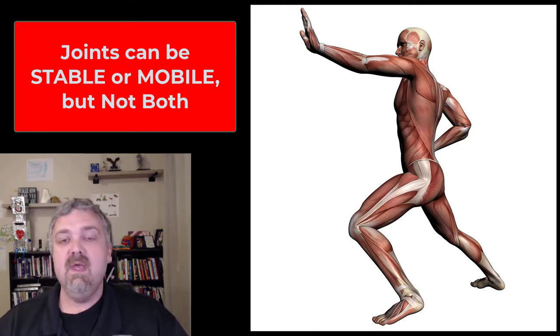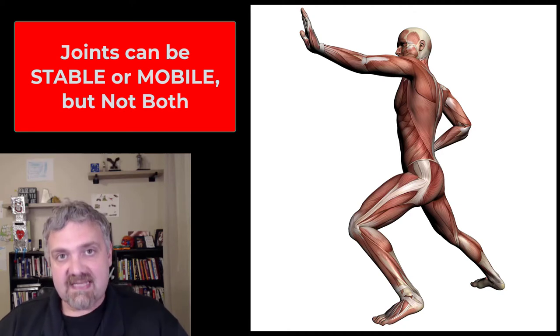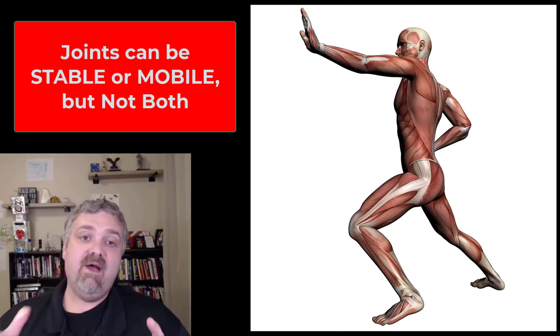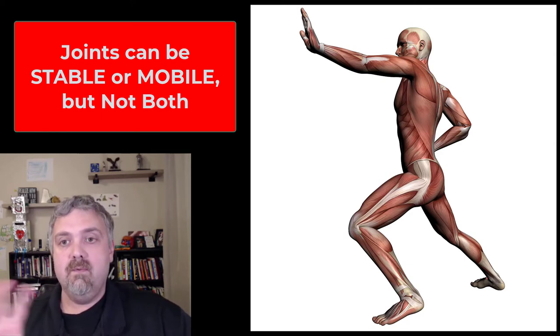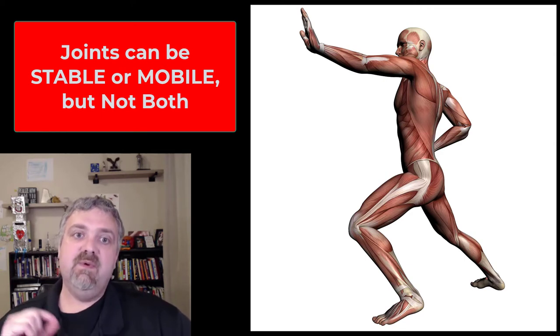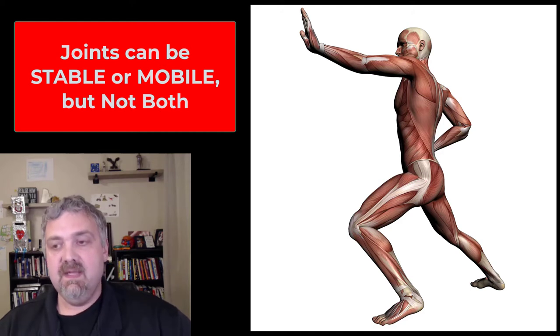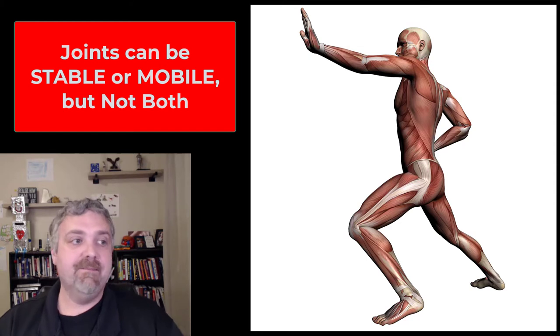We're going to cover the joint movements, the basic ways that joints are classified. But for right now, I really just want to talk about the fact that joints use a compromise between mobility and stability. A joint can be really stable or really mobile, but it can't be both. That's a sacrifice, one for the other.